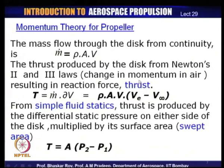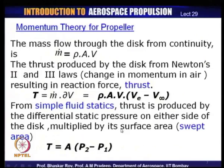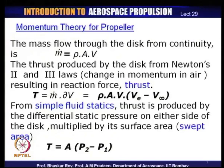This is the momentum method of estimating thrust. On the other hand, from the fluid statics of the physics model, thrust can be estimated by simply taking the pressure differential across the two sides of the disc and multiplying by the swept area, giving another value of thrust: A × (P₂ − P₁). So thrust can indeed be calculated by two different methods — the momentum method and the pressure differential method.